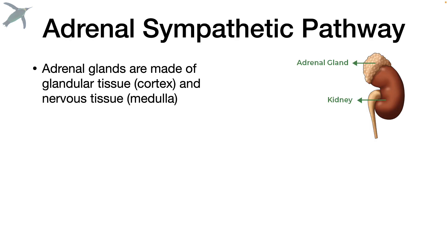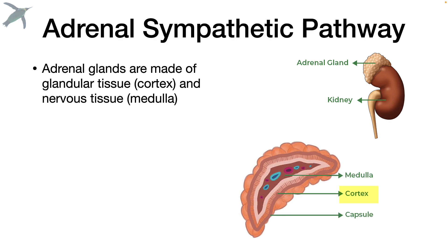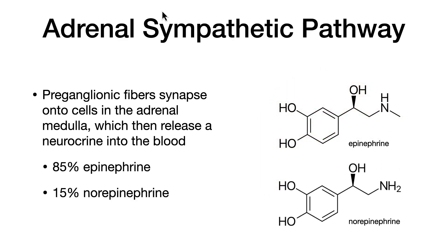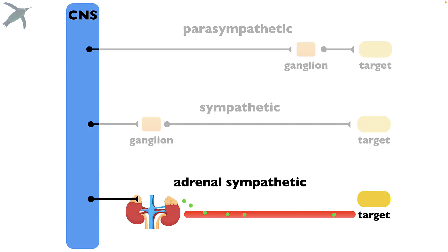There's one more pathway: the adrenal sympathetic pathway. The adrenal glands — which just means near the kidneys — are strange glands because the cortex, the outer part, is a proper gland, but the medulla, the inner part, is modified nervous tissue. Preganglionic fibers synapse onto cells in the adrenal medulla, which then release neurocrines into the blood — mostly epinephrine (formerly called adrenaline) and some norepinephrine (formerly called noradrenaline). There is no postganglionic neuron and no ganglion; instead, the preganglionic neuron synapses directly into the adrenal medulla, and those hormones bind to receptors on targets throughout the body. These effects essentially enhance the sympathetic fight, flight, or freeze system.